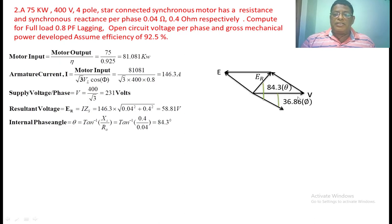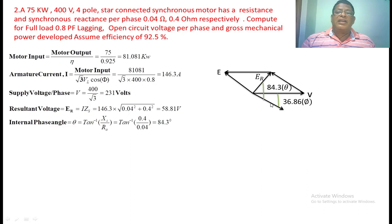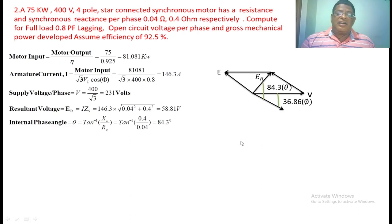Now we draw the phasor diagram. This is the applied voltage V and this is the counter voltage E — the induced voltage in a synchronous motor. The resultant of these two is ER, equal to I into Zs. In this case the current lags the voltage at 0.8 power factor lagging, giving the angle 36.8 degrees. The angle between ER and I is 84.3 degrees — the internal angle.